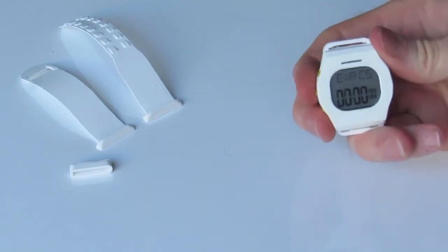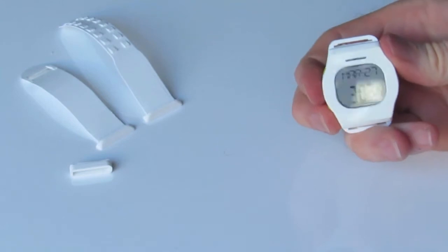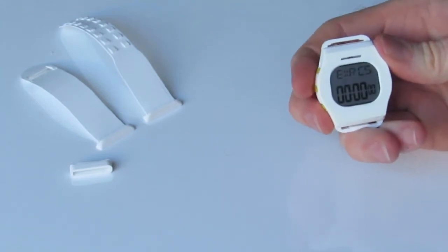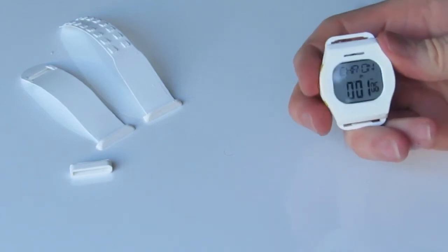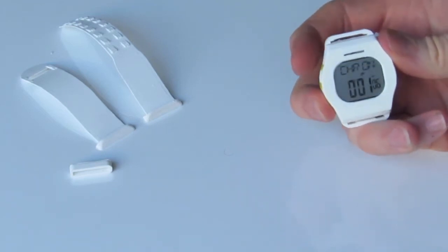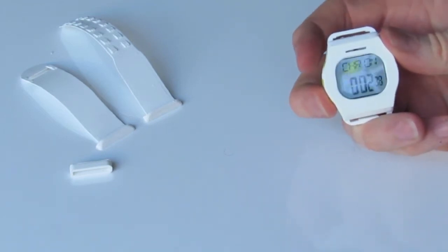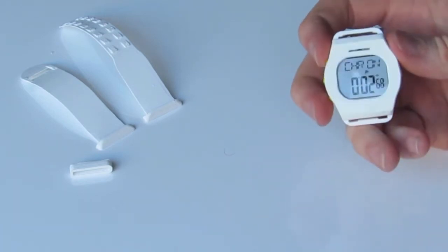We can just quickly check that our buttons are all functioning properly and not getting jammed. This middle button is our mode button. The middle left is mode. The bottom left is start and stop. The top left is our reset.